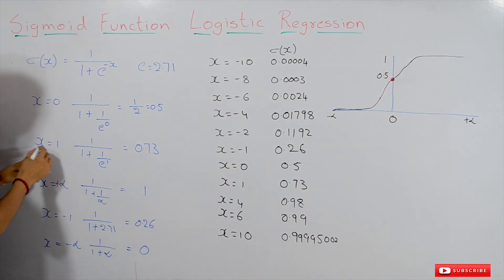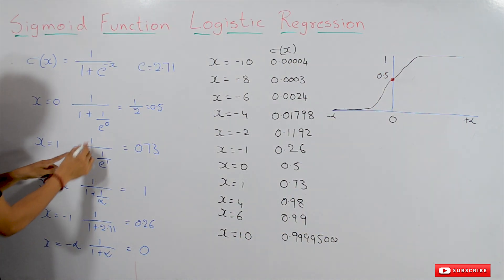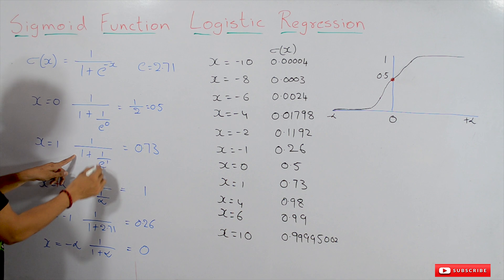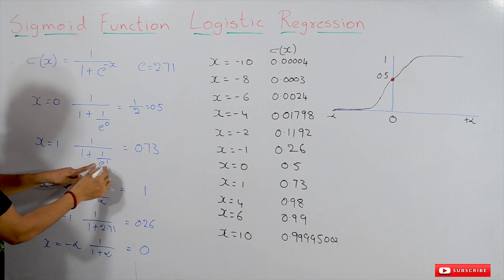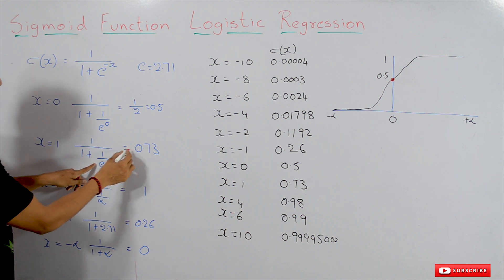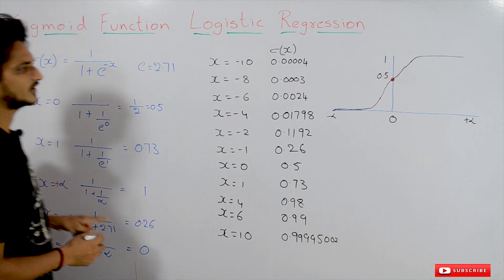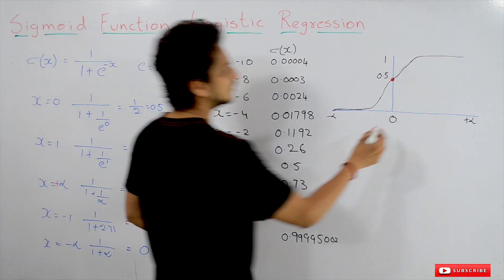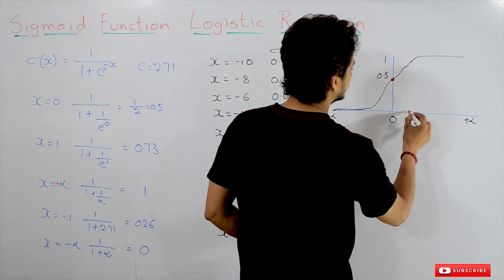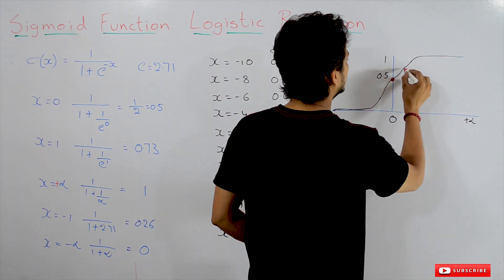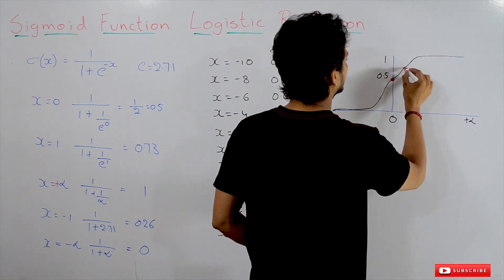Now let's try x equals 1: 1 divided by 1 plus 1 over e to the power 1, which equals approximately 0.7. So at x equals 1, we have a value of 0.7.